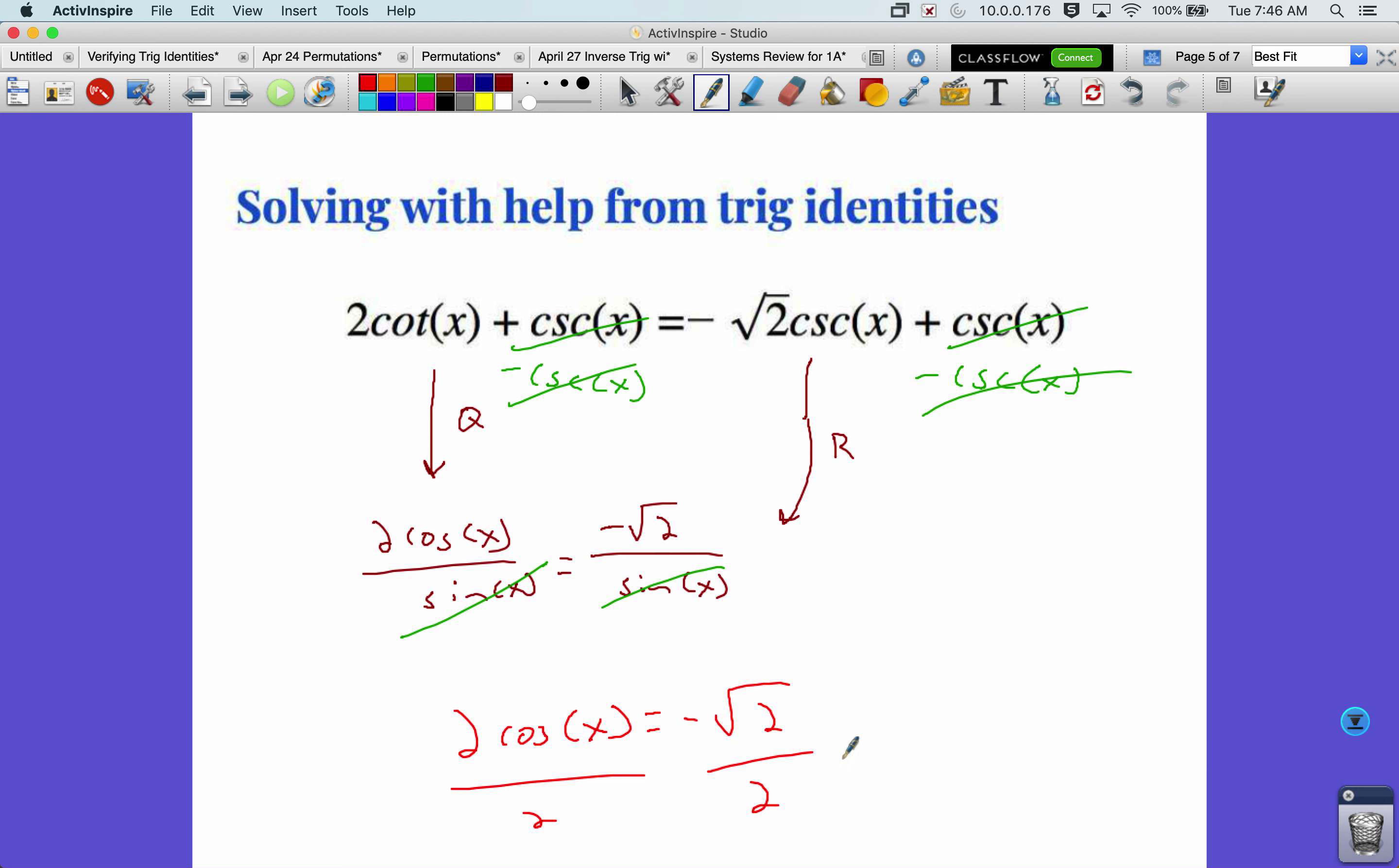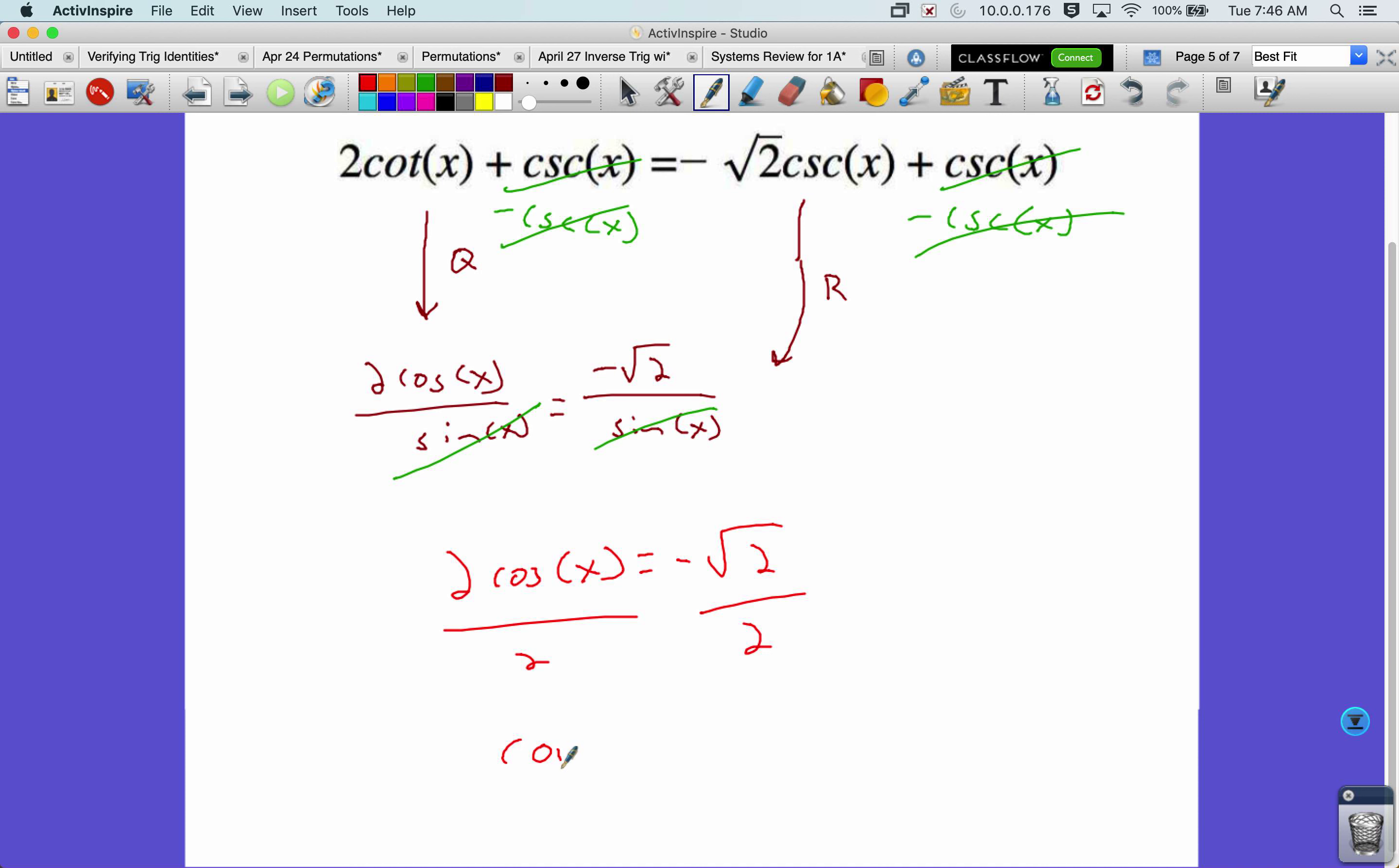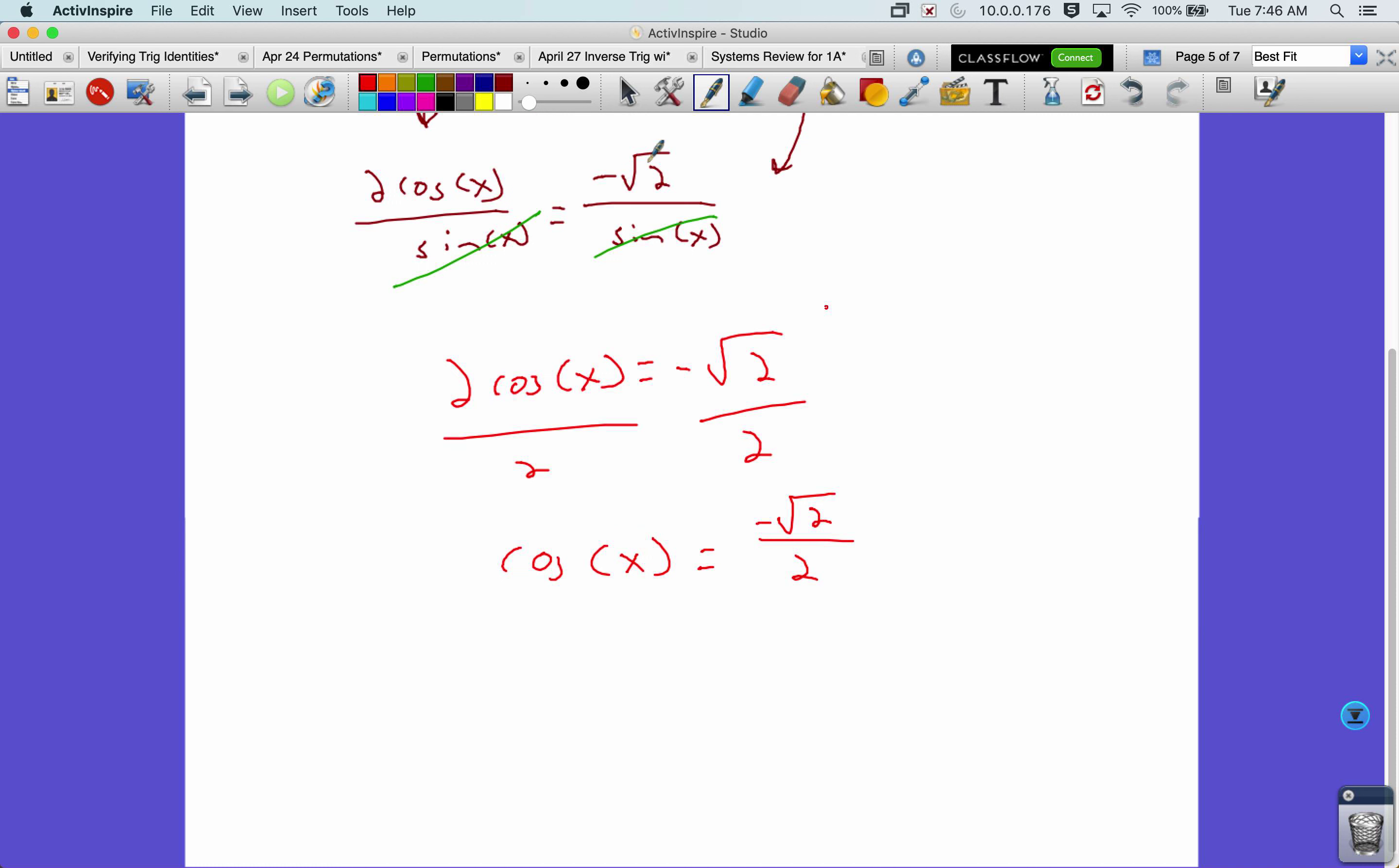Divide both sides by 2. Cosine of x equals negative root 2 over 2. Label that. So cosine always gives us adjacent over hypotenuse. Let's see if we can draw in this triangle. So the adjacent has to be negative root 2. So this length right here has to be negative root 2. It's coming to the left because it's negative. Hypotenuse of 2. Make a very similar picture to the last one, just different numbers.